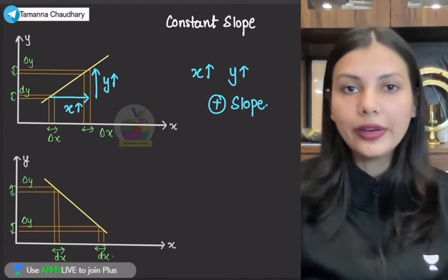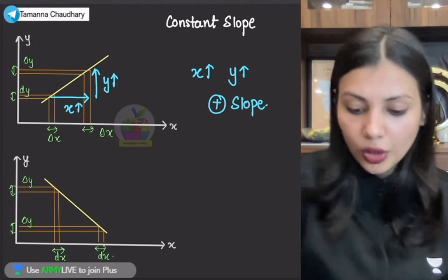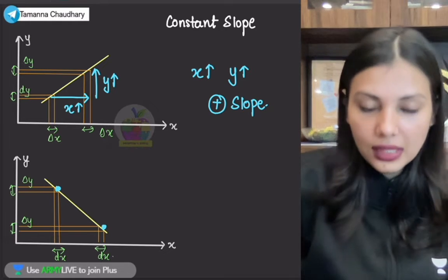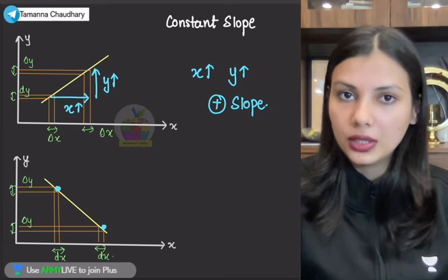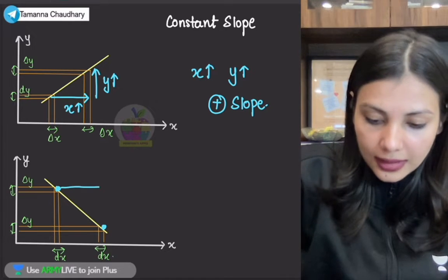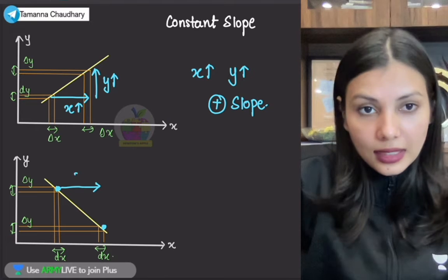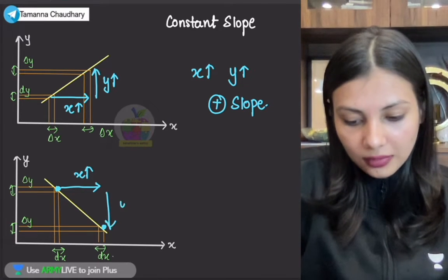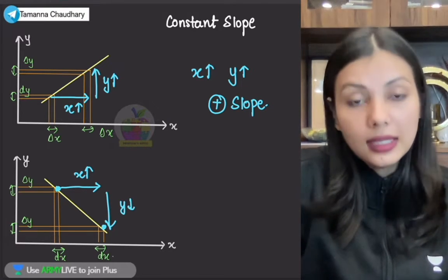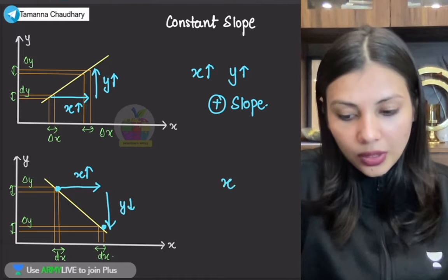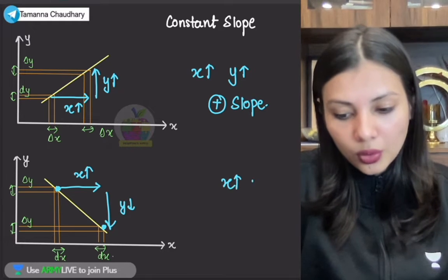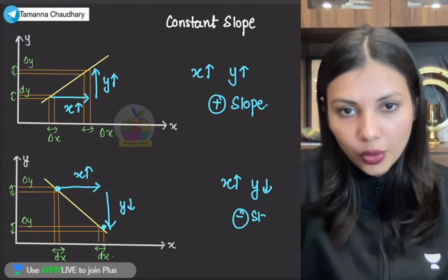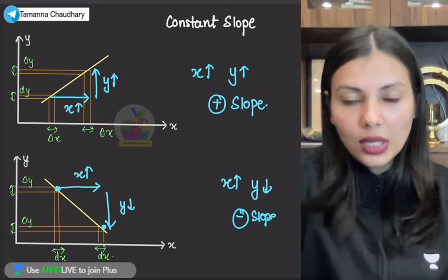Usi tariqe se, agar doosre waale graph ko dekho, to doosre waale graph mein, maan lo tum ye waale point se lekar ye waale point tak ja rahe ho. To tumne X ko increase kiya. Lekin is X ko increase karne ke chakkar mein, tumhaare paas Y ki value woh decrease hogi. To yahaan par jab tum ek quantity ko increase kar rahe ho, doosri quantity tumhari decrease ho rahi hai — aise slope ko negative slope bola jaata hai.